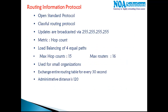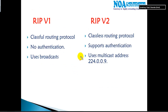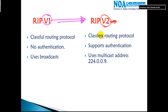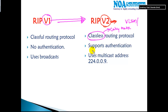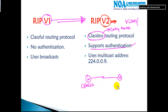RIP is generally not used in today's production networks. There is a Version 2 which introduced some enhancements. The major enhancement is that Version 2 supports classless routing — it carries the subnet mask information along with updates, meaning it supports VLSM networks like EIGRP and OSPF. It also supports authentication — a method where a password is configured on both sides, and updates are only exchanged if the passwords match.